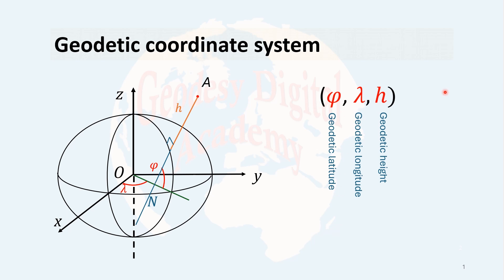The coordinate of a point in the geodetic coordinate system is defined by three parameters. Phi stands for geodetic latitude, lambda for geodetic longitude, and h for geodetic height, which shows how much this point is above or below the reference ellipsoid.